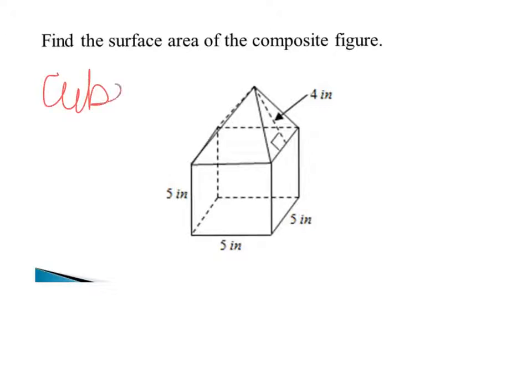The surface area formula for a cube is 6s² (six side squares), and the one for a pyramid is one base plus half of the perimeter times the slant height. These are formulas for the cube surface area and pyramid surface area respectively.